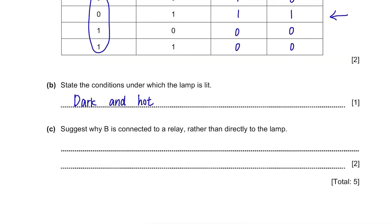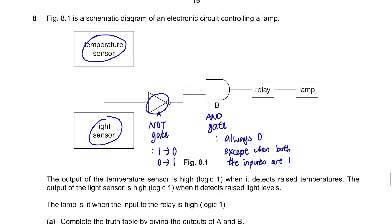Part C. Suggest why B is connected to a relay rather than directly to the lamp. What is the purpose of relay in the middle? It is there because B alone cannot provide enough power for lamp to operate.